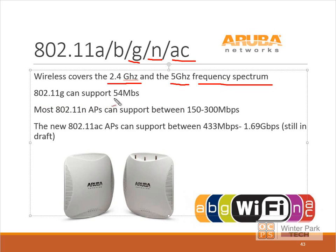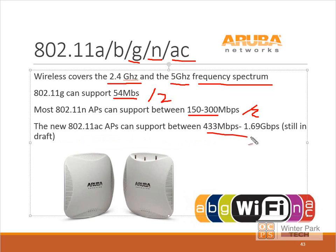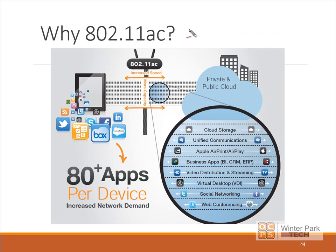802.11G can support a link speed of about 54 megabits per second. Remember, actual throughput is almost half of the link speed. 802.11N can support between 150 and 300 megabits per second, so divide that by two for your real transfer rate. The new 802.11AC standard is still in draft but supports between 433 megabits per second and 1.69 gigabits per second. This is very exciting — 802.11AC is one of the most exciting improvements we've seen in wireless in a long time.